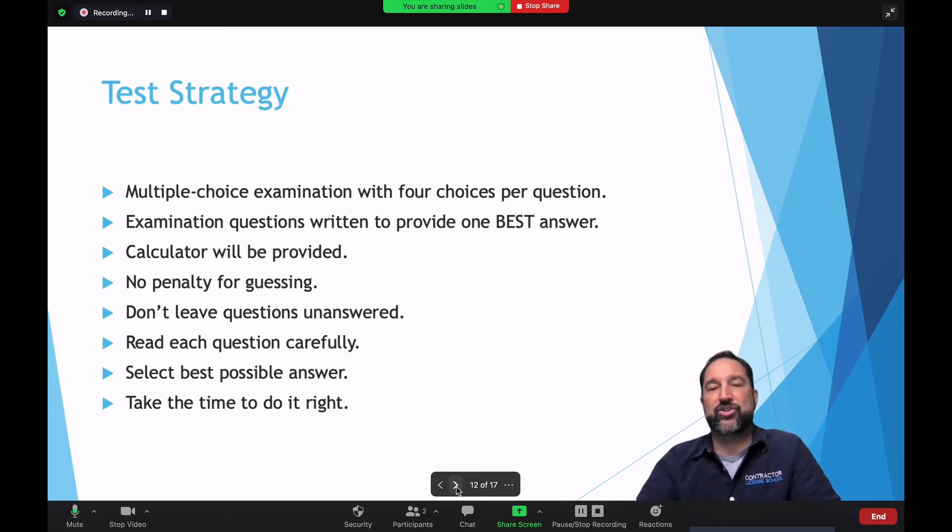Now, just a few things about test strategy that we want to make you aware of. And by the way, we do have a 10, 11 minute video that helps you with multiple choice type questions. So you can always request that once you're a part of our program, then we help you with that process. But here's some things. So multiple choice examination with four choices per question. So that's what your test is going to look like. You're going to have examination questions written to provide one best answer. Calculator will be provided to you. Keep in mind, it will not add multiply fractions. And so you're going to need, it's going to be a bare bones basic calculator. So know how to use that.